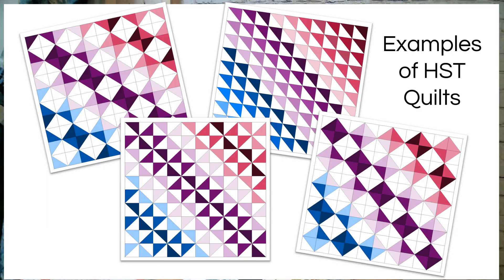Half square triangles, or HSTs as they're commonly known, are a fundamental block in quilting. They consist of two triangles that make a square, and they're used in various quilt patterns to create dynamic designs and intricate layouts.